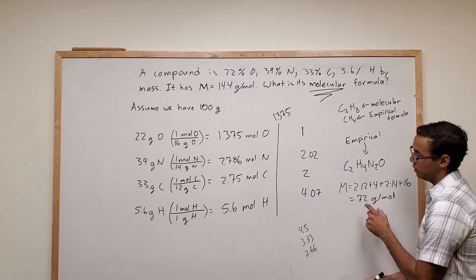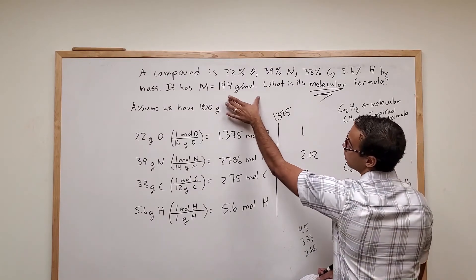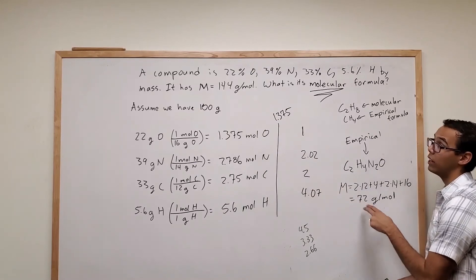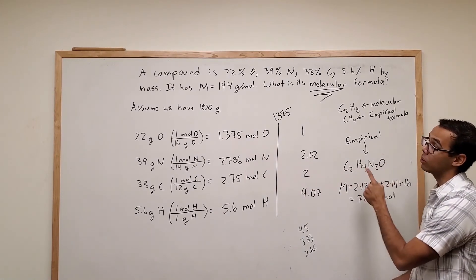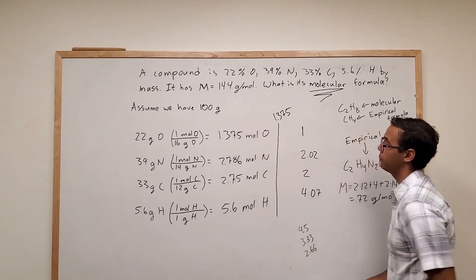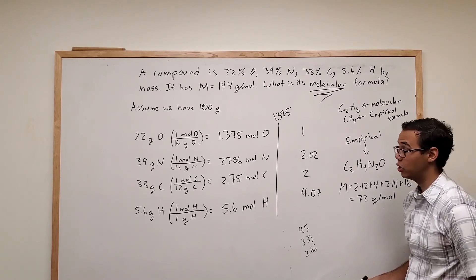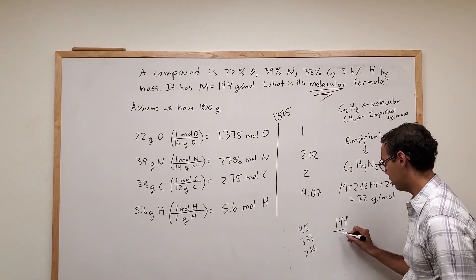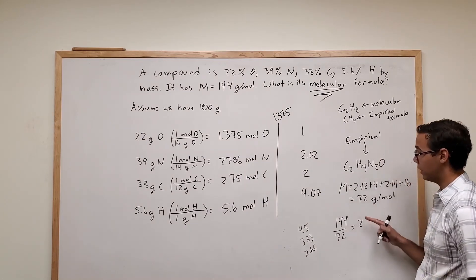So you'll see that our next step is going to take the 72 grams per mole and 144, and we're going to divide the 144 by 72 to find out what number we need to multiply each of these subscripts by in order to have the right molecular formula. So as it turns out, it's just two. 144 divided by 72 equal to two. Take that, multiply everything in here by two.